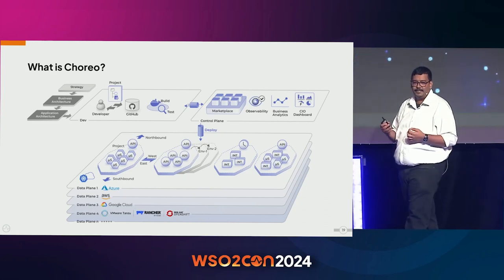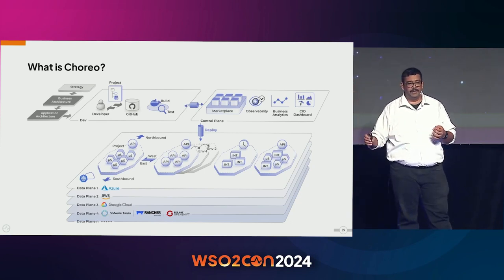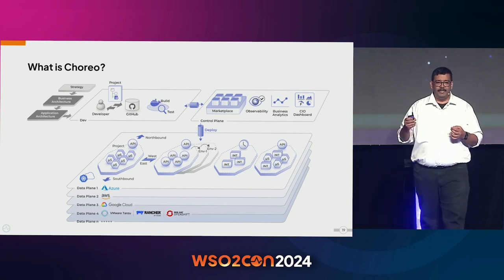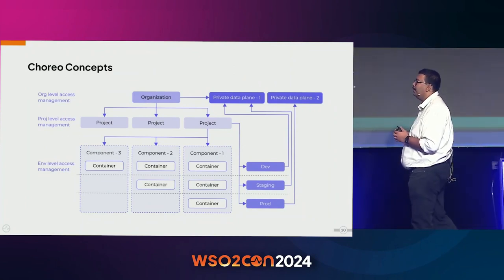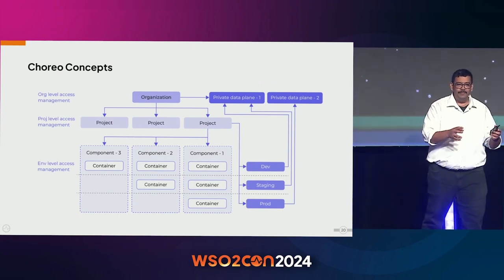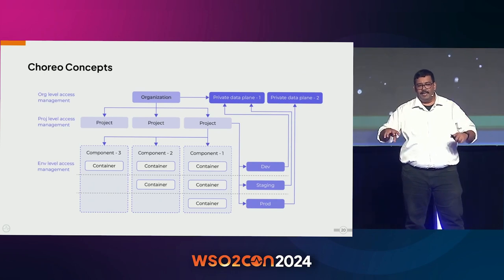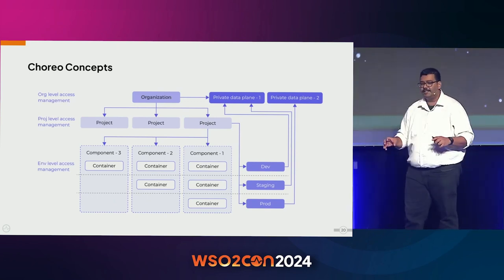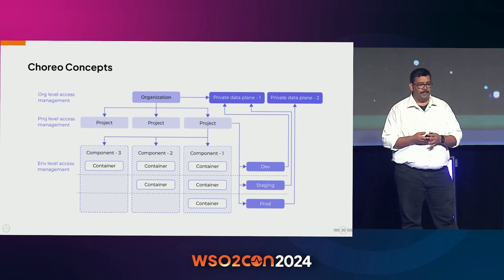Choreo can deploy into multiple environments and manage automatic observability and analytics. There are abstractions available: it lets you define how you want to slice and dice your problem. There is an abstraction called organizations; underneath that, you can have multiple projects; underneath that, multiple components. You design your microservices architecture into a combination of all these abstractions and then deploy it into multiple environments.